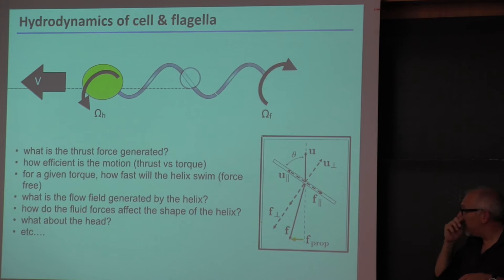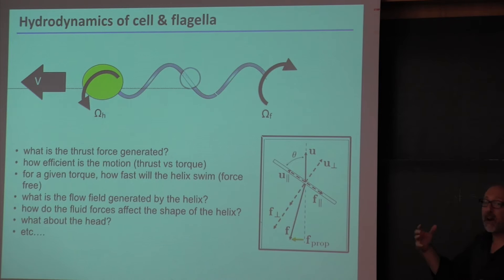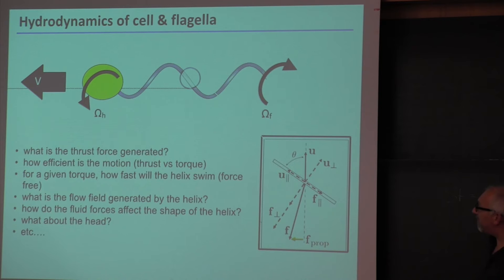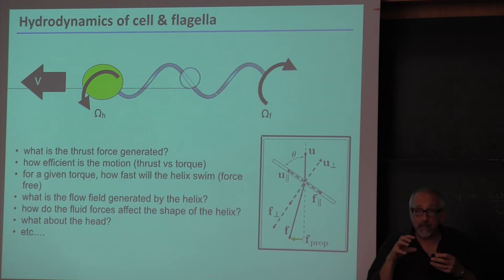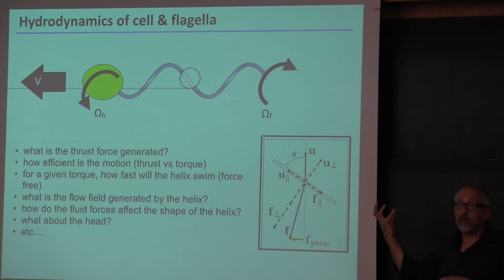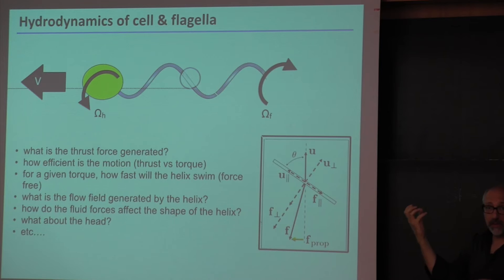We can ask: what is the thrust force generated, how efficient is the motion (for a given motor power, how fast does the organism swim), and if the helix is flexible rather than rigid, how does the force distribution affect the helix shape and in turn the hydrodynamics? We also cannot ignore the head — the cell body is the goods, the reason the animal lives — and so there are many questions to address.